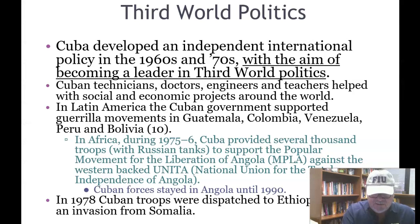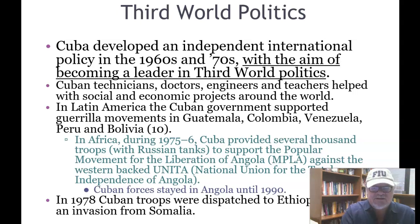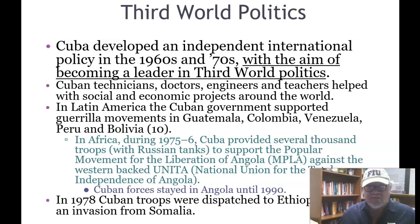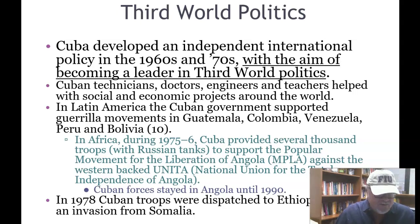Cuba developed an independent international policy in the 1960s and 70s with the aim of becoming one of the key leaders of the third world. Cuban technicians, doctors, engineers, and teachers helped with social and economic projects around the world. In Latin America, the Cuban government supported guerrilla movements in Guatemala, Colombia, Venezuela, Peru, and Bolivia — they were quite active and trying to stir up conflict in the Western Hemisphere.